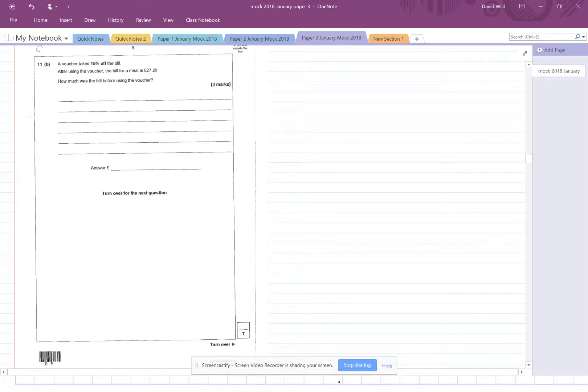Part B. A voucher takes 15% off the bill. So after using the voucher, the bill for the meal is £27.20. How much was the bill before using the voucher? Again, I always do these with ratios. Okay, so we've got a voucher, then we've not got a voucher. Okay.